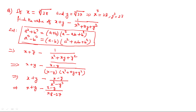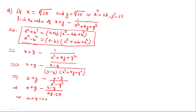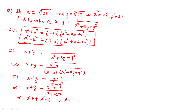Since x equals the cube root of 28, cubing both sides gives x cubed equals 28. Similarly, y cubed equals 27. Substituting: the denominator becomes 28 minus 27 equals 1. The numerator becomes x minus y times x plus y, which simplifies. The x and negative x cancel, leaving y plus y equals 2y.